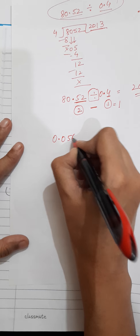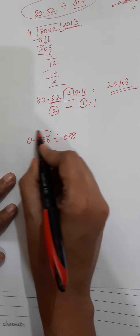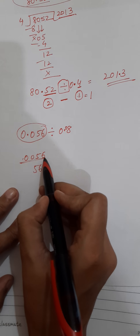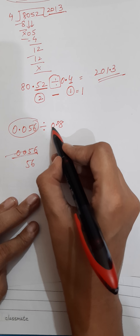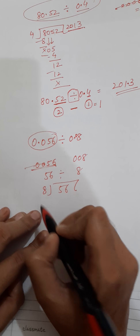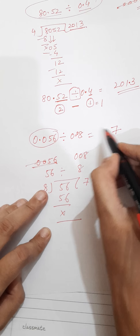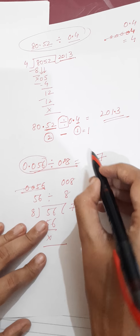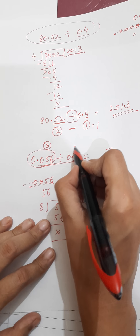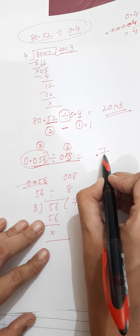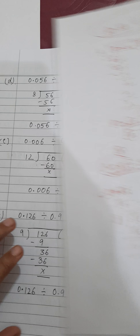In part d, 0.056 divided by 0.08. Remove the decimals: 0.056 means 56 and 0.08 means 8. Divide 56 by 8: 8 sevens are 56, so the answer is 7. Now place the decimal: after the decimal in 0.056 there are three digits, after the decimal in 0.08 there are two digits. Subtract: 3 minus 2 equals 1. Place the decimal one digit from the back, giving the answer 0.7.